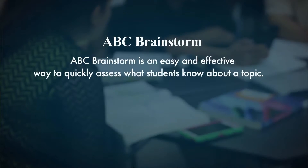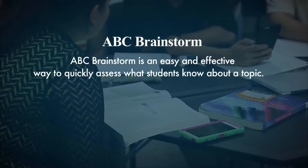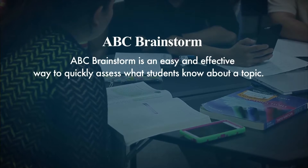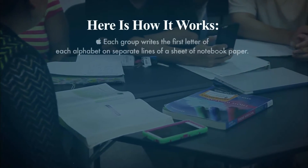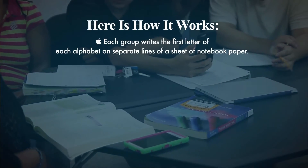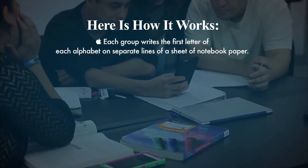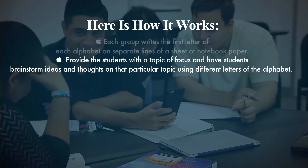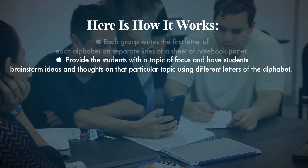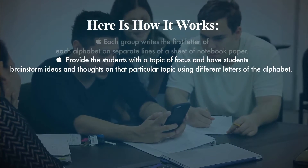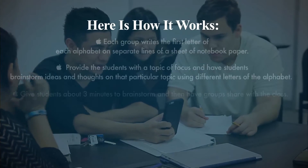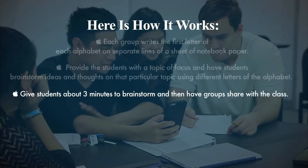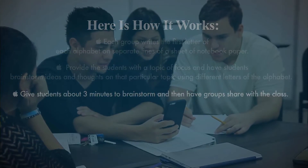ABC Brainstorm is an easy and effective way to quickly assess what students know about a topic. Each group writes the first letter of each alphabet on separate lines of a sheet of notebook paper. Provide students with the topic of focus and have them brainstorm ideas and thoughts using different letters of the alphabet. Give students about three minutes to brainstorm and then have groups share with the class.